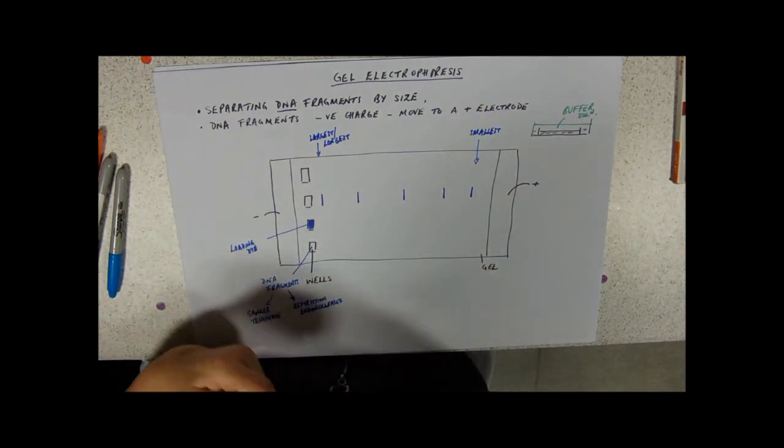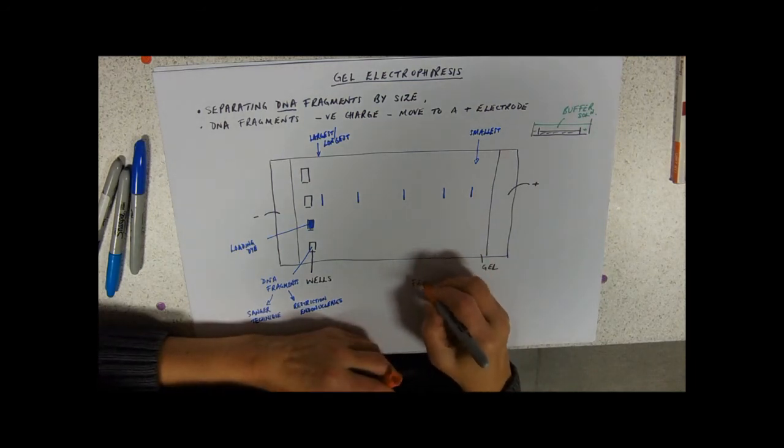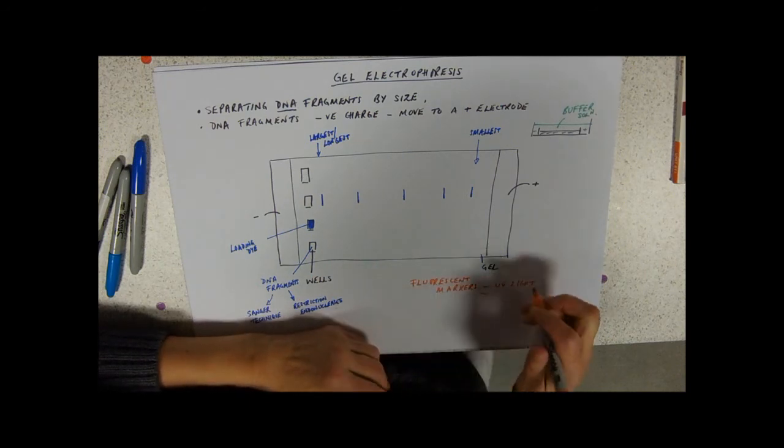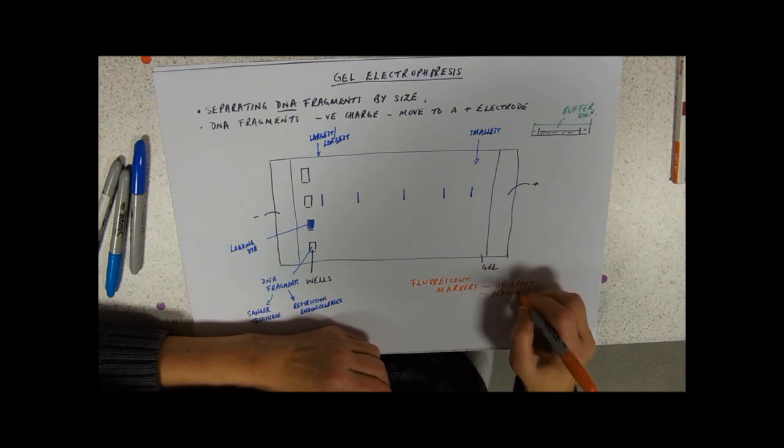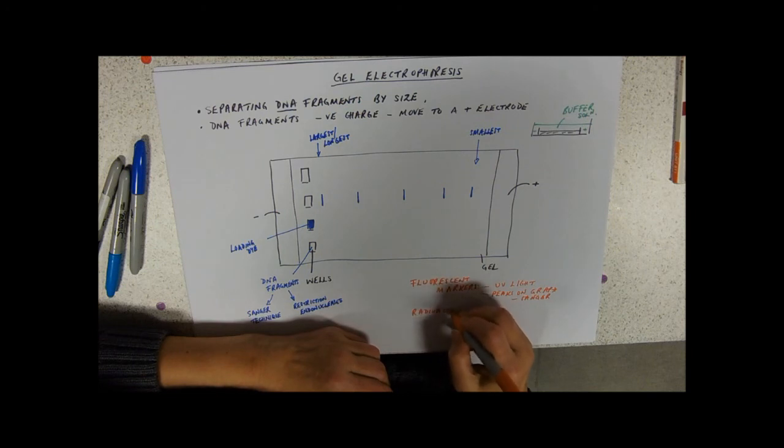What you might also find reference to is DNA probes. And if you remember, in the Sanger sequencing, they're using fluorescent markers. So you can use fluorescent markers and use UV light to detect them. Or you can use different fluorescent markers and look at peaks on a graph. So that's particularly used in Sanger sequencing, UV light. And you can use radioactive probes to identify particular base sequences.